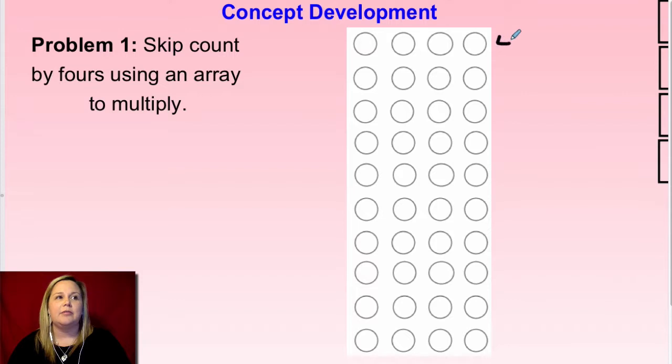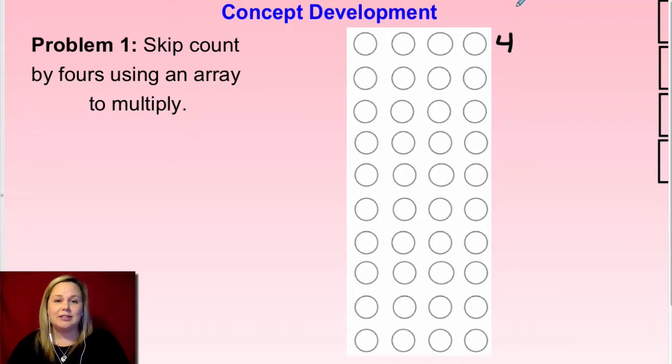So I would go: four — and then I would write four next to it. I'd like for you to go ahead and have your array template out and write four next to it as well.